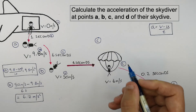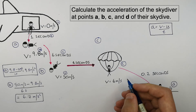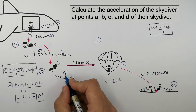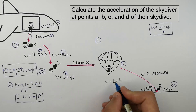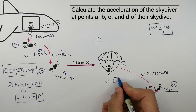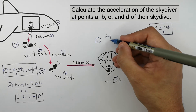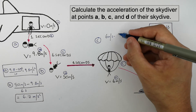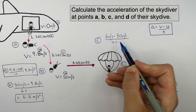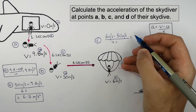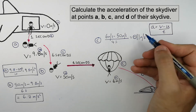At point C, they pull their parachute open and decelerate very quickly. The skydiver goes from an initial velocity of 50 meters per second to a final velocity of 6 meters per second. So acceleration equals 6 minus 50, divided by 4 seconds, giving a deceleration of minus 11 meters per second squared.